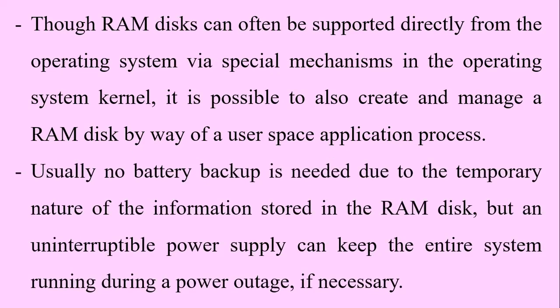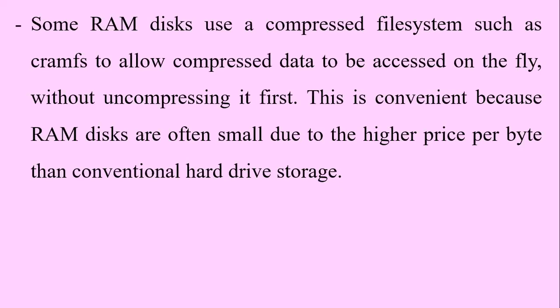Usually, no battery backup is needed due to the temporary nature of the information stored on the RAM disk, but an uninterruptible power supply (UPS) can keep the entire system running during a power outage if necessary. Some RAM disks use a compressed file system such as CRAMfs to allow compressed data to be accessed on the fly. This is convenient because RAM disks are often small due to the higher price per byte compared to conventional hard drive storage.